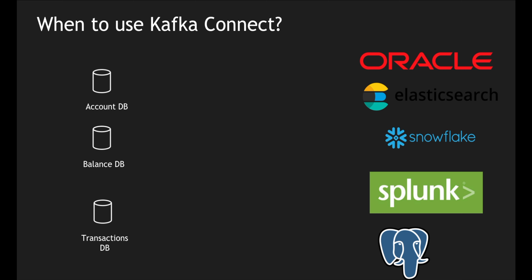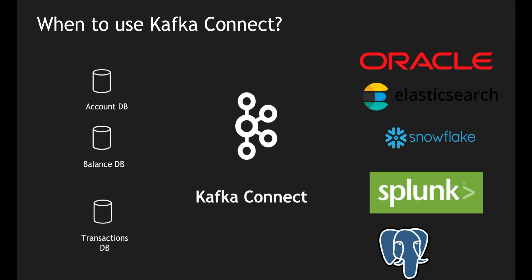Or maybe I want to push all these into Elasticsearch so I can search for specific information across them. This is where Kafka Connect comes in handy. Generally, we create a change data capture kind of system which captures all the messages from the account, balance, or transaction databases and then write some code to transfer that into a corresponding data source.